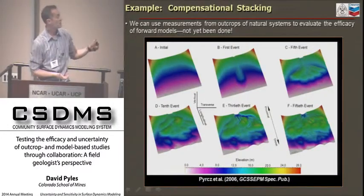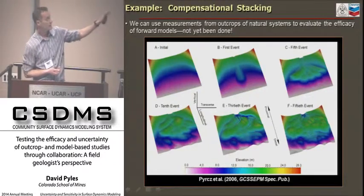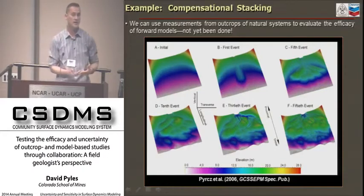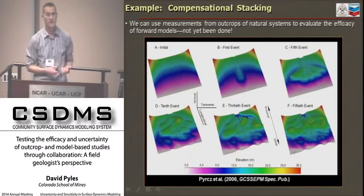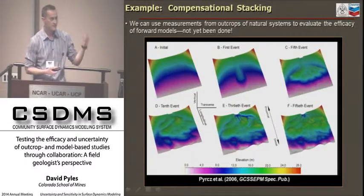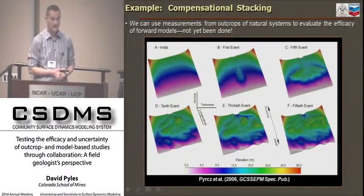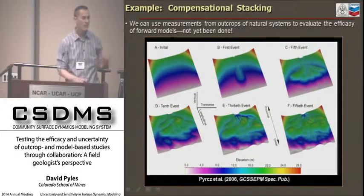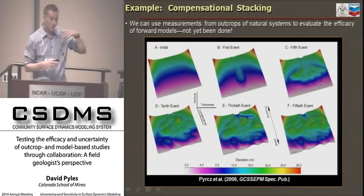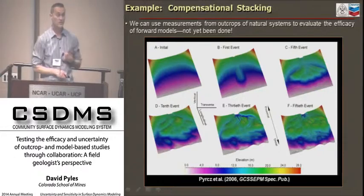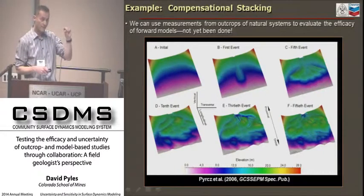We haven't yet done that comparison, but I'd love to work with Michael in the near future to ask what the compensation index is based on his rules-based model and how it compares to the natural system. I don't mean to infer that this system in Ireland represents the natural variability of all systems. I have two PhD students working on other submarine fans with varying sizes and shapes to see if basin boundary conditions affect compensational stacking as well. The point is we have a methodology that can be used to address a number of questions and to compare stratigraphic stacking patterns in outcrop with those from numerical outputs.